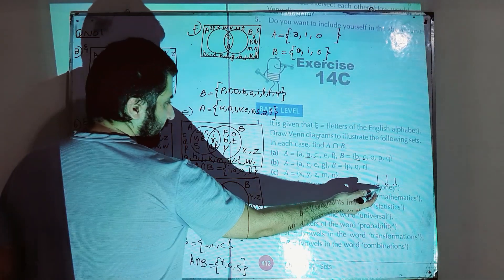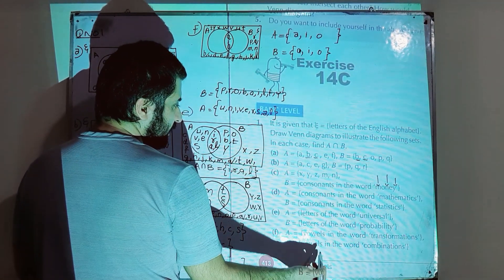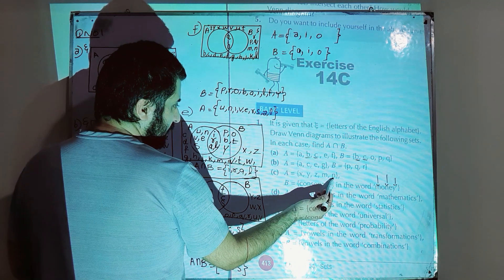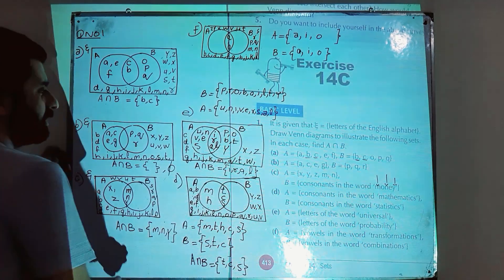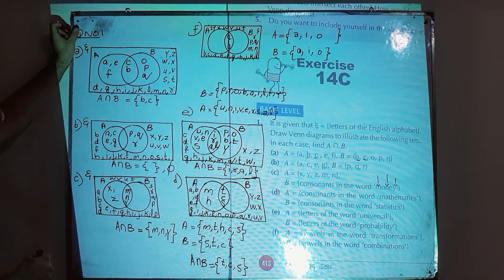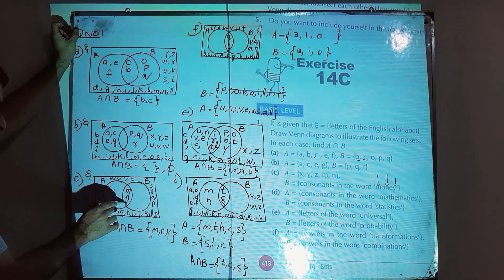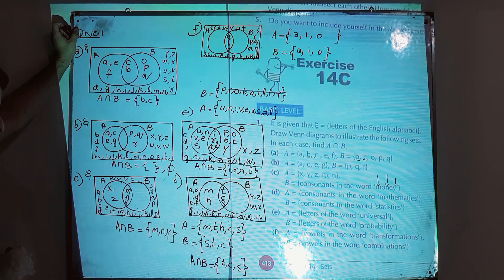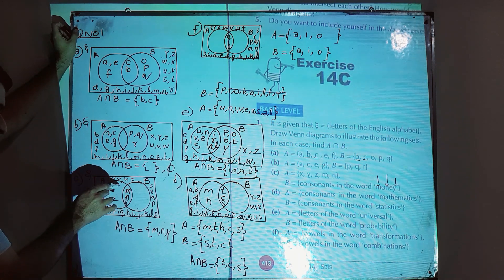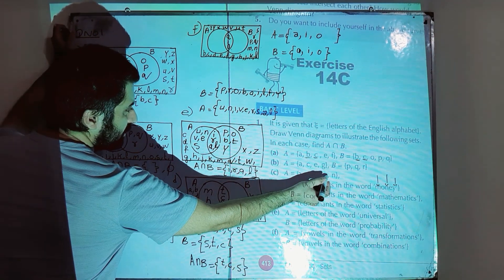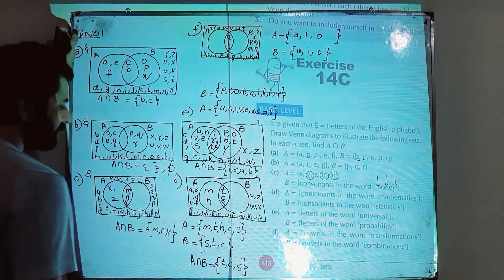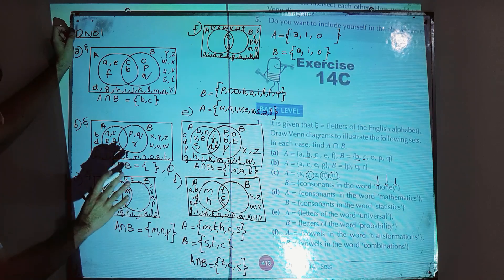The common elements are: m is part of both A and B, n is also part of both A and B, and y is a common element to both A and B. So we write m, n, and y in the overlapping part which belongs to both A and B.